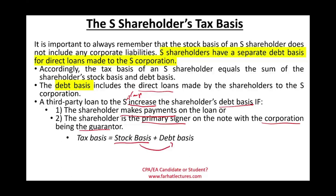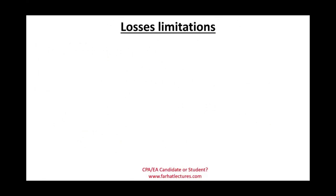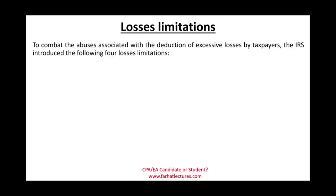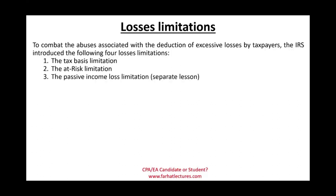To sum up, the tax basis is composed of the stock basis and the debt basis. This is important because we have to deal with something called loss limitations. To combat abuses associated with deduction of excessive losses by taxpayers, the IRS introduced four loss limitations. You cannot keep deducting losses as the S corporation incurs them unless certain limitations are met. The first limitation is tax basis; the second is at-risk limitation; the third is passive income loss limitation; and the fourth is excess business loss limitation.